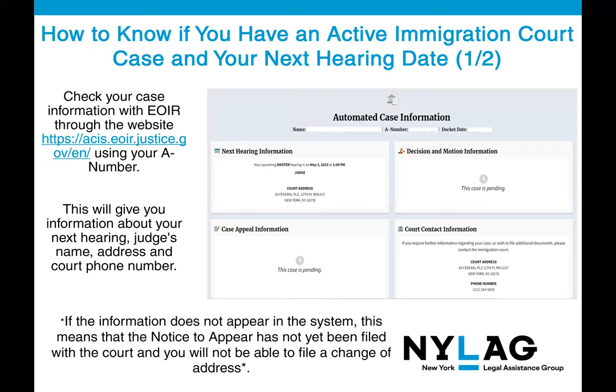How do you know if you have an active case in immigration court and check your next hearing date? You can check your case information with EOIR through their website by typing in your A number. This will give you information about your next hearing, your judge's name, address, and court phone number. If this information does not appear in the system, it means the Notice to Appear, or NTA, has not yet been filed with the court, and you will not be able to file a change of address.